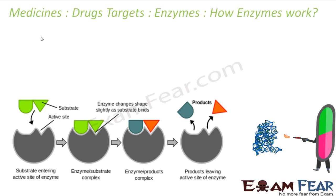Let's talk about enzymes as drug targets. First, let's understand how enzymes work — a quick recap from the last chapter. What this enzyme does is hold the substrate — shown here in green — so that the chemical reaction can occur properly, because it holds the substrate in a suitable position. That is one function of the enzyme.